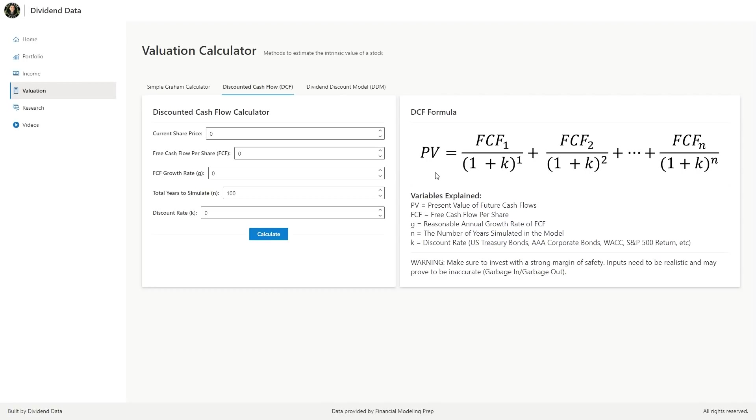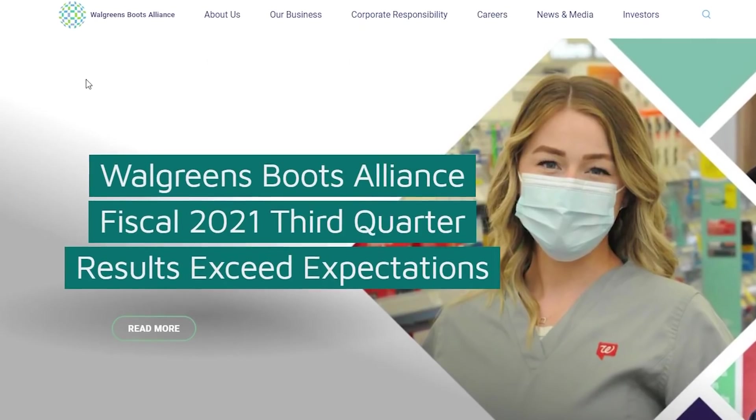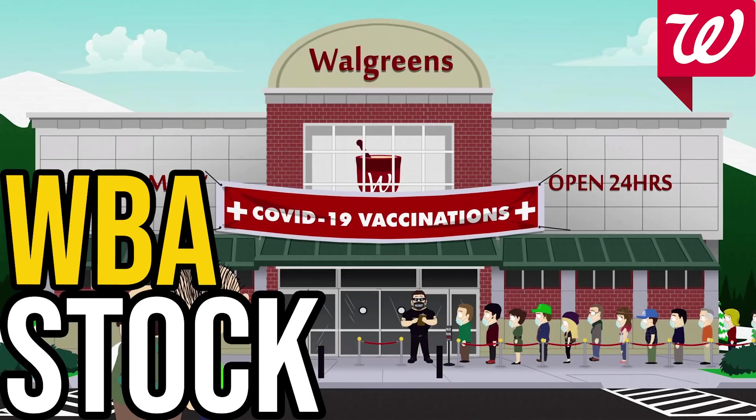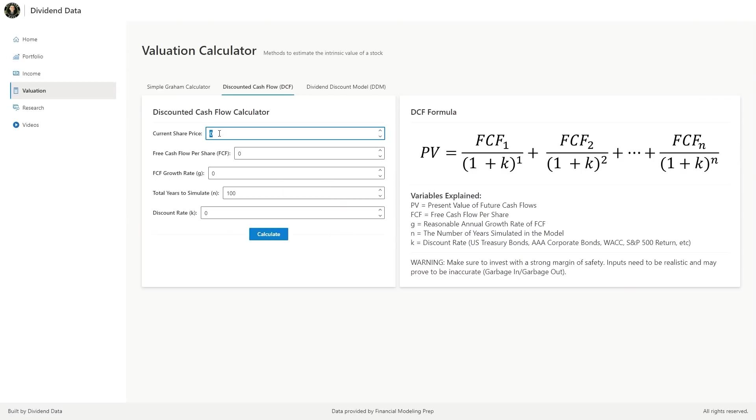Alright, now that we understand the concept of discounted cash flow, let's actually do an example, like Walgreens Boots Alliance. I've actually been buying that stock recently. I did a stock review video and you should check that out for more info.